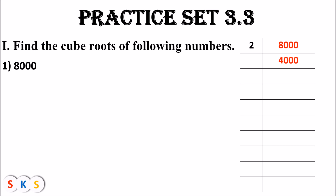4000 is divisible by 2, so we divide by 2 to get 2000. Dividing 2000 by 2 gives 1000. Dividing 1000 by 2 gives 500. Dividing 500 by 2 gives 250. Dividing 250 by 2 gives 125. Now 125 is not divisible by 2, so we divide by 5.